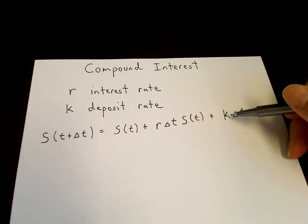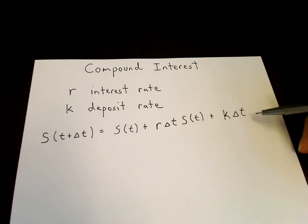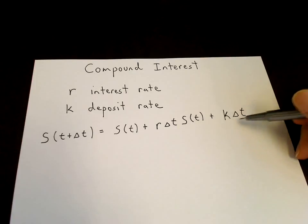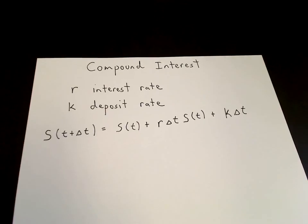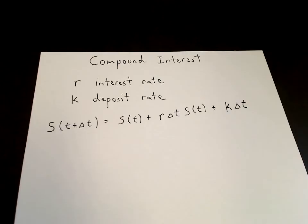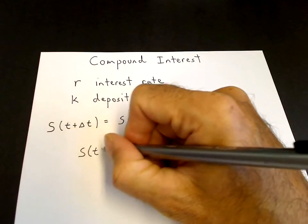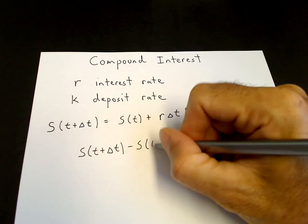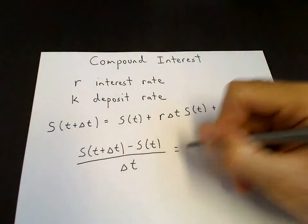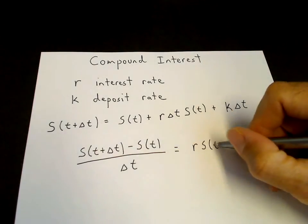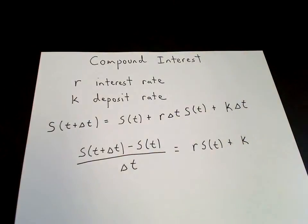That's the discrete equation for the amount of money at time t plus delta t. To derive the differential equation, we take the limit as delta t goes to 0. We subtract S(t) from both sides and divide through by delta t to find the derivative. What remains on the right-hand side is r times S(t) plus k.